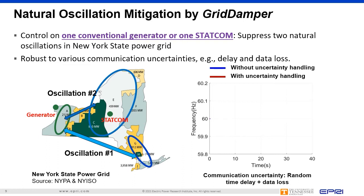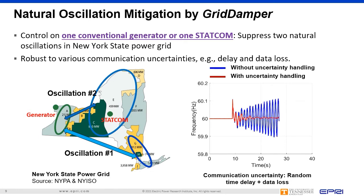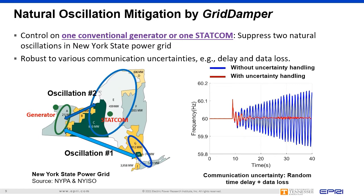Grid Damper is also able to deal with various types of communication uncertainties. The video on the right compares oscillation dynamics when the uncertainty handling function was activated versus deactivated. Without the uncertainty handling function, the oscillation was sustained and kept growing. When communication uncertainty handling was in service, the oscillation settled quickly within 20 seconds.